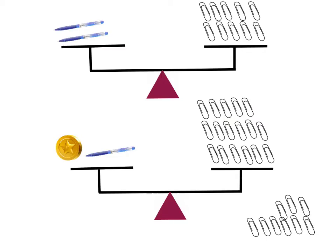As we work through these problems today, we're going to be using a little bit of what we learned yesterday and some new learning on top of that. Let's remember that whenever you take something off of one side of the pan balance, you have to take something off the other side as well, and we have to take equal amounts off so that they stay balanced.